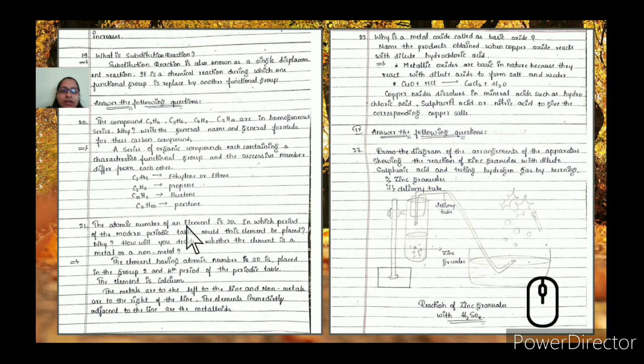Next question: the atomic number of an element is 20. In which period of the modern periodic table would this element be placed and why? How will you decide whether the element is a metal or non-metal? The element with atomic number 20 is placed in group 2 and 4th period of the periodic table. The element is calcium. Metals are on the left of the line, non-metals are on the right. Elements immediately adjacent to the line are metalloids.